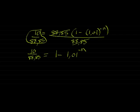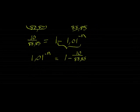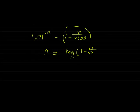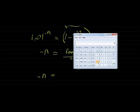So if I just take, I'm going to take this term to the other side. That will make it positive. So I have 1.01 to power of negative n is equal to 1 minus 10 over 88.85. Which means I've got negative n is equal to...